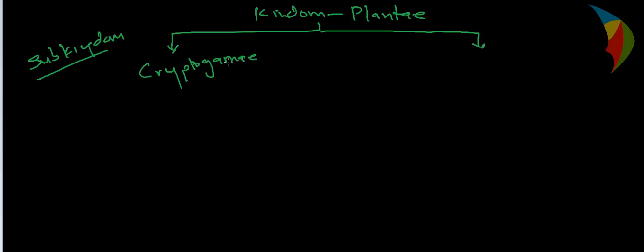Cryptogamy means these are classified as non-flowering plants — the plants which do not bear any flower. They are classified as Cryptogamy.